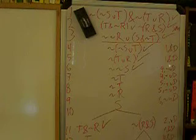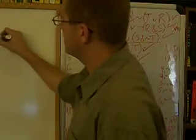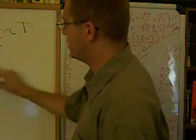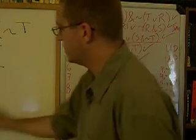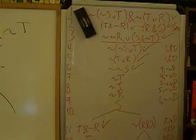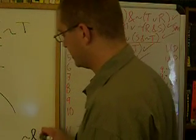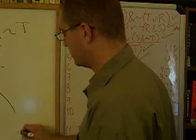We've got S and not T turns into S and not T. So S and not T turns into S and not T. And then we're going to decompose from line 11, the negated conjunction. Negated conjunction decomposition coming from line 11.